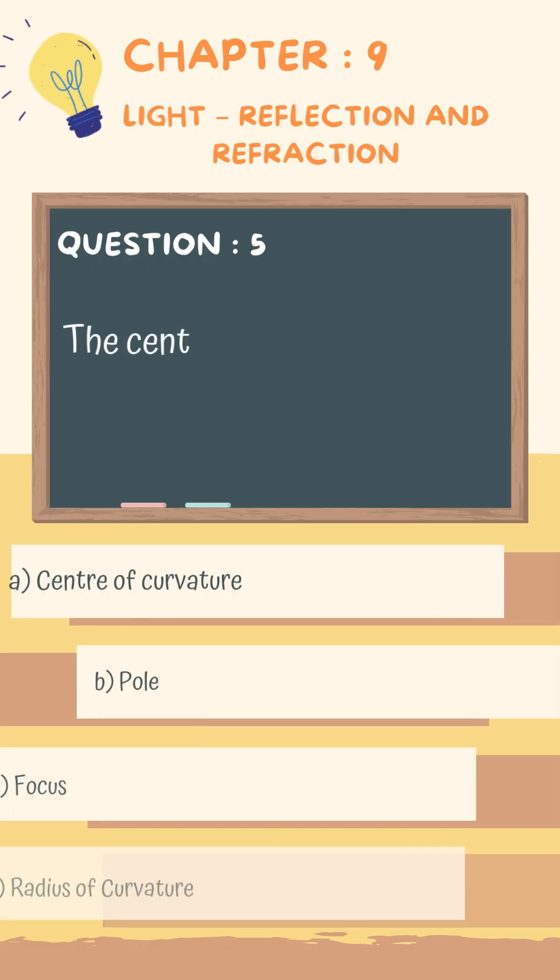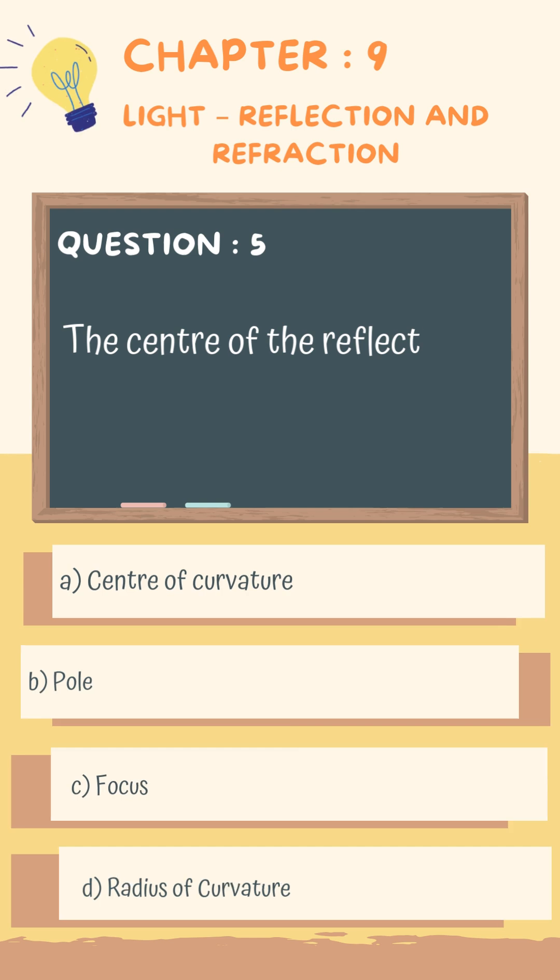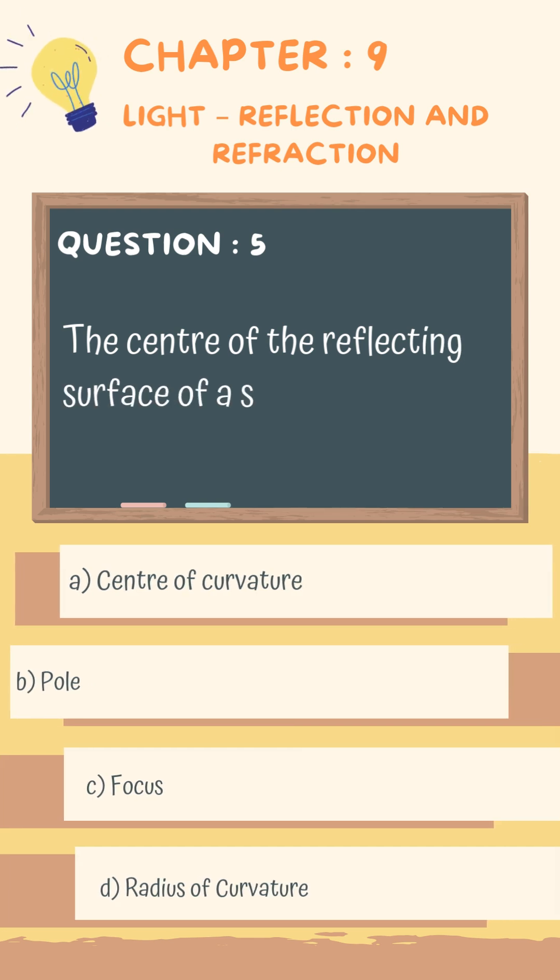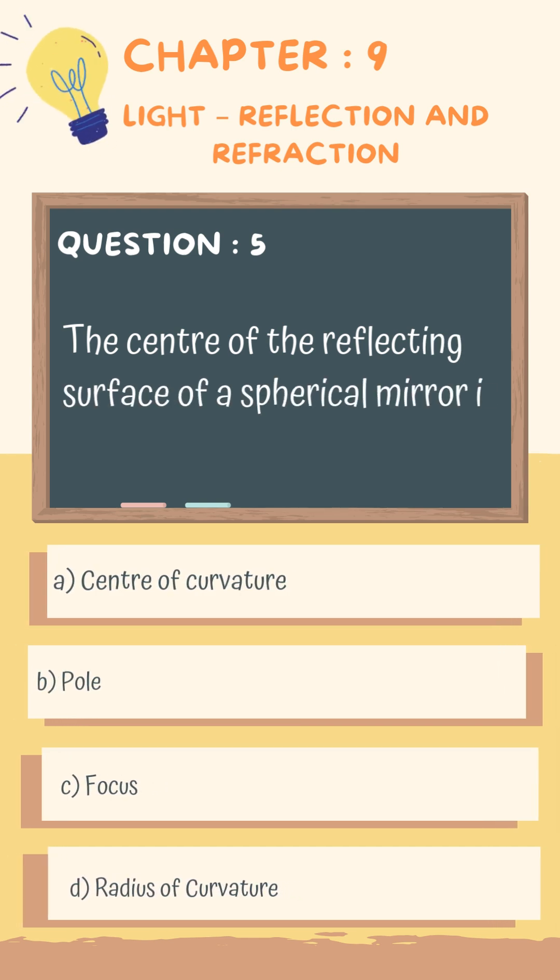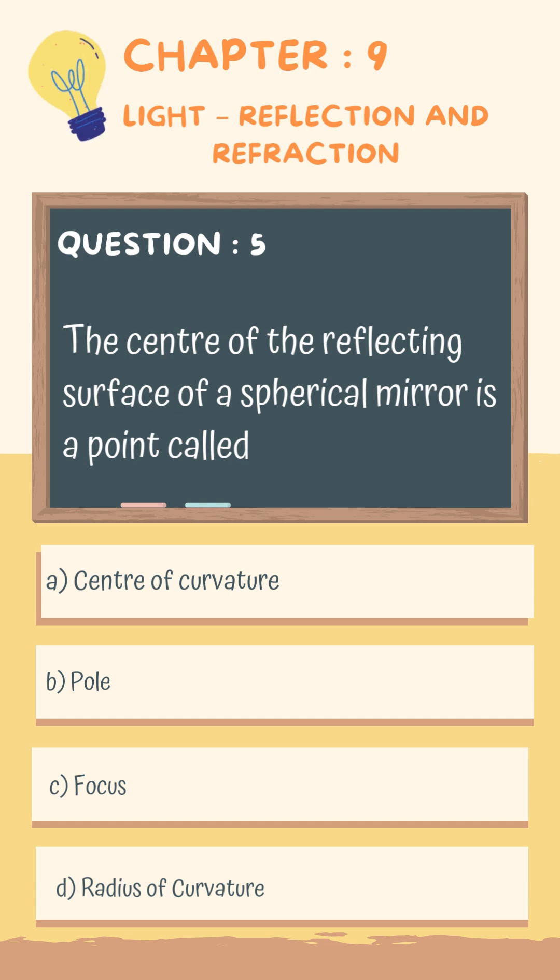Question 5. The center of the reflecting surface of a spherical mirror is a point called: A. Center of curvature, B. Pole, C. Focus, D. Radius of curvature.